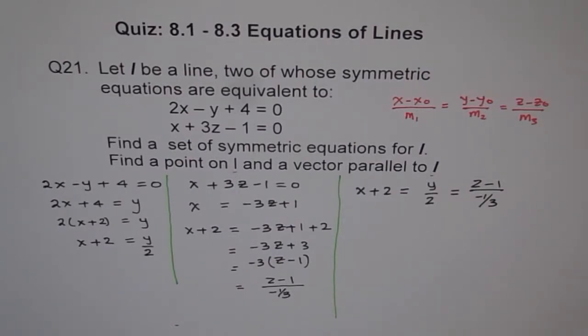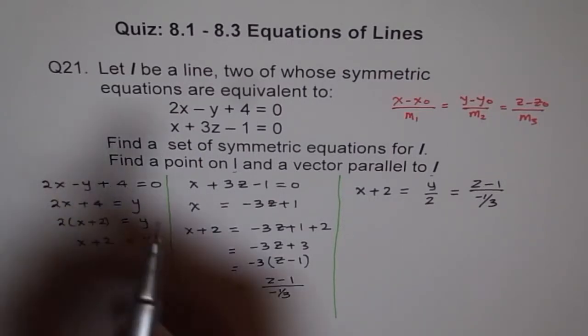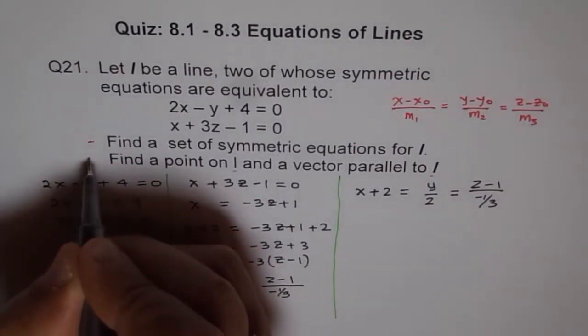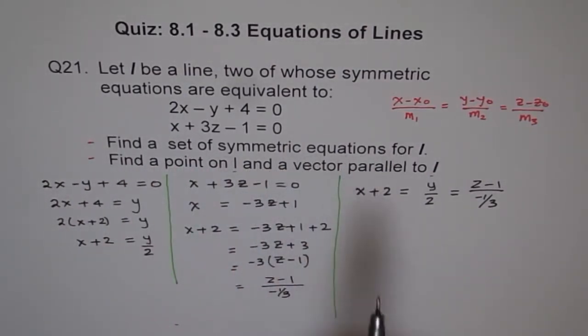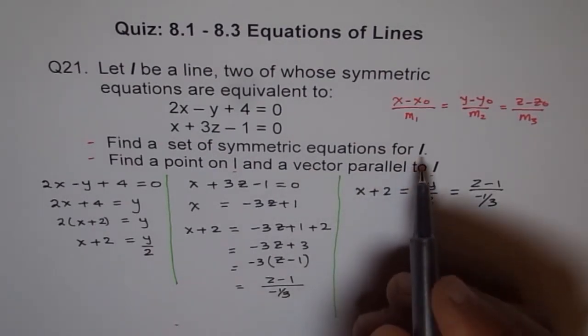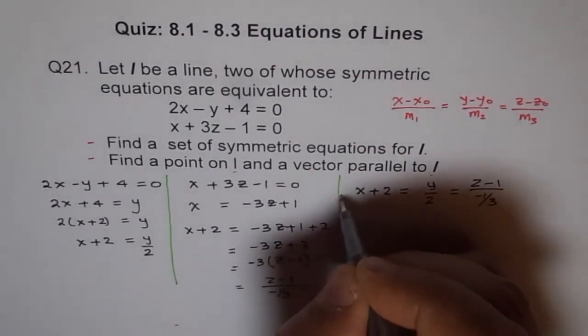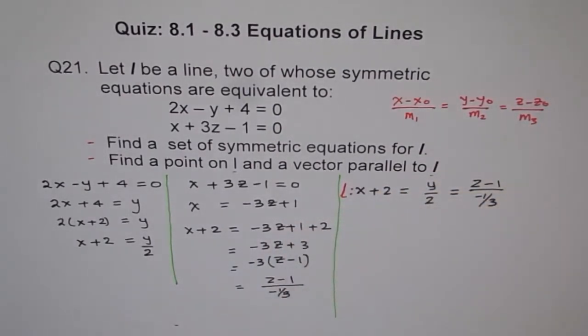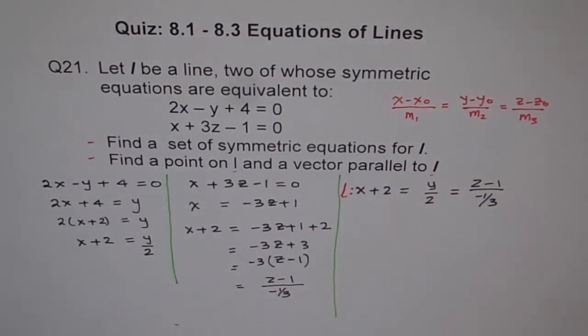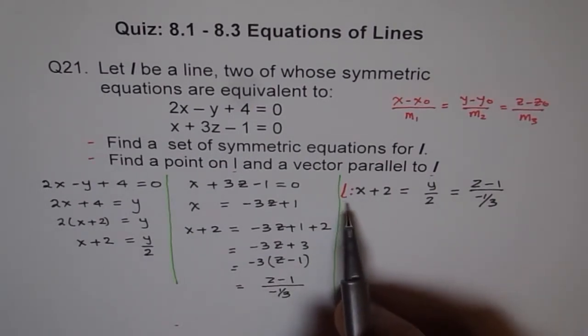So we can write this as x plus 2 equals y over 2, which is equal to z minus 1 over minus 1 over 3. That is perfectly matching with our symmetric line equation format. Now, from here, we can answer the rest of the questions. That was the first part and now we can answer these two. That is the set of symmetric equation for line L. That's the equation of our line L.